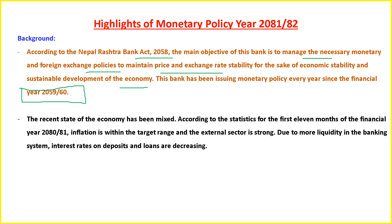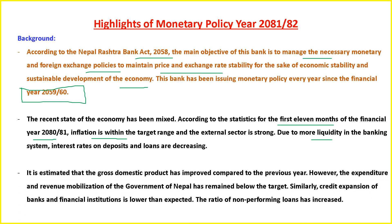The recent state of the economy has been mixed. According to statistics for the first 11 months of financial year 2080/81, inflation is within the target range and the external sector is also strong. Due to more liquidity in the banking system, interest rates on deposits as well as loans are decreasing. GDP has improved compared to the previous year; however, government expenditure and revenue mobilization have remained below target, credit expansion of banks and financial institutions is lower than expected, and the ratio of non-performing loans has increased.